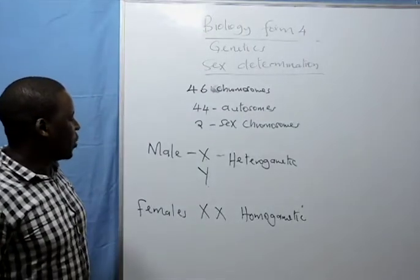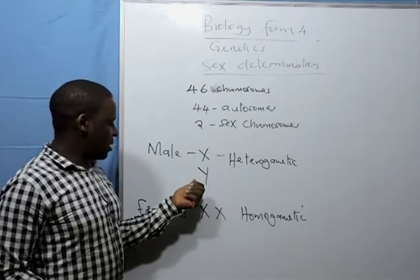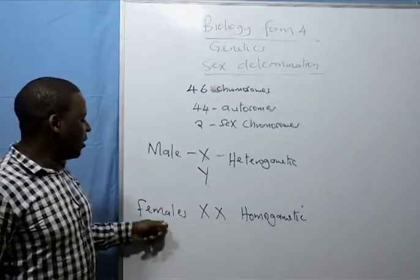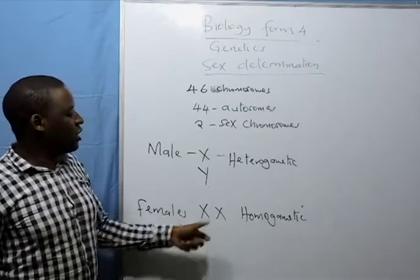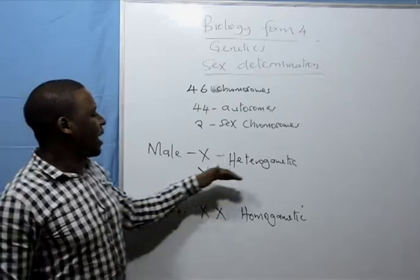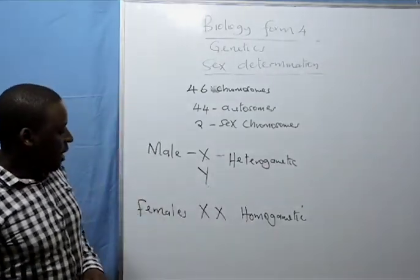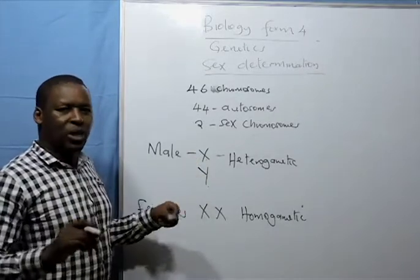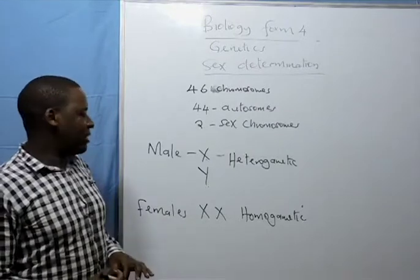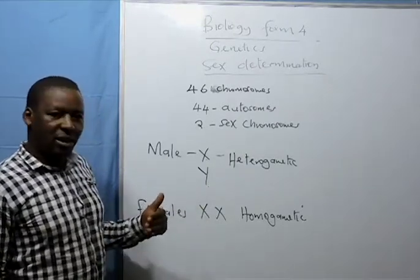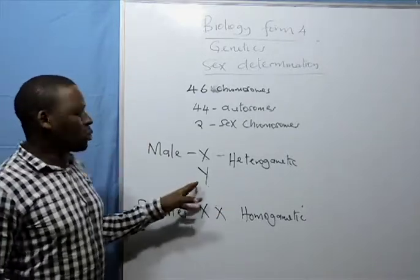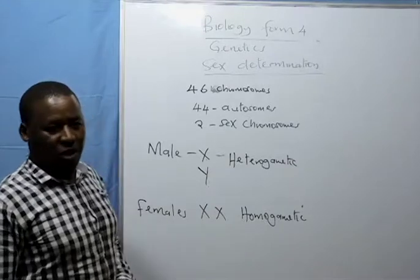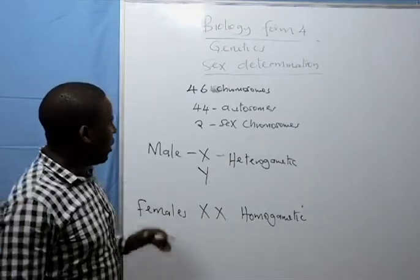Males carry X and Y chromosomes, the two chromosomes that carry genes that determine sex. The females carry X chromosomes. Males are heterogametic, females are homogametic. The X chromosome carries the gene for sex and also genes that determine other characteristics. The Y chromosome carries a gene for sex and genes that determine other characteristics, but chromosome Y has very few genes. It's actually known as genetically empty. Now I want us to look at the probability of a male or female child in a family.